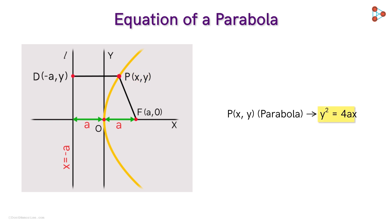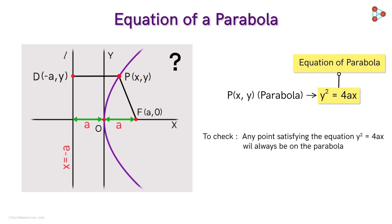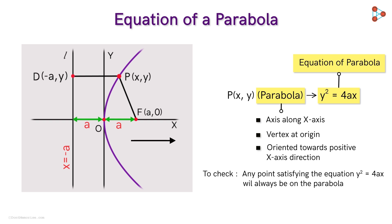Can we conclude that this is the equation of the parabola? We also need to check whether the reverse direction follows — that is, any point satisfying this equation will always lie on the parabola. In the next lesson, we will verify this. We will see that y squared equals 4Ax is the equation for this type of parabola, where the axis is along the x-axis, the vertex is at the origin, and it opens towards the right. Here, A is a positive constant representing the distance between the focus and the vertex. In the next lesson, we will also find the equations for parabolas with different orientations.